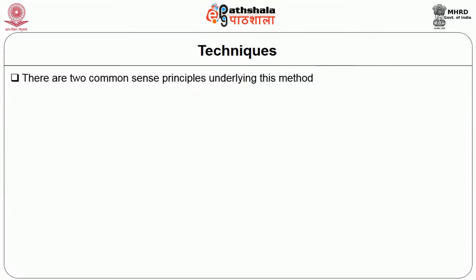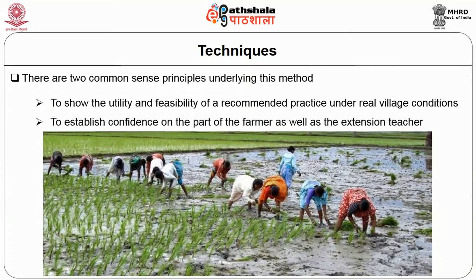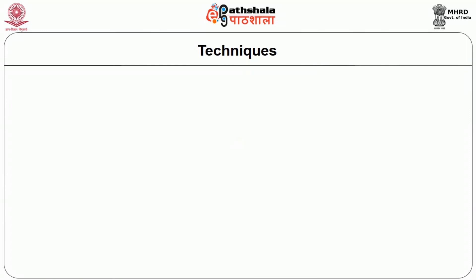The main objective of result demonstration is to show the utility and feasibility of recommended practice under real village conditions. The second objective is to establish confidence on the part of the farmer as well as the extension teacher. Certain techniques and procedures must be followed in conducting result demonstration.